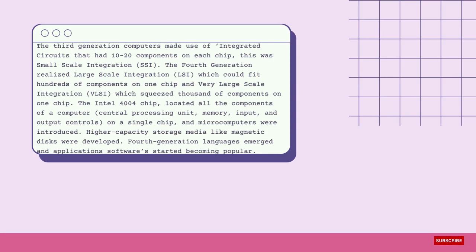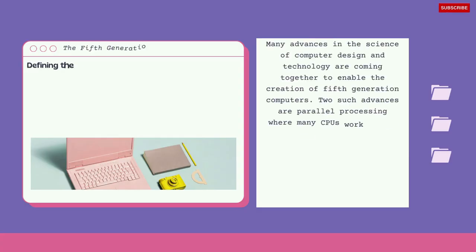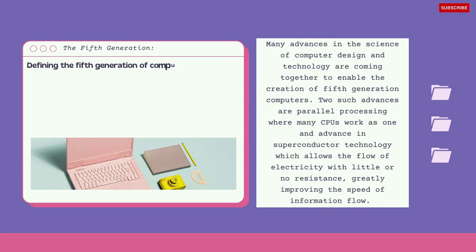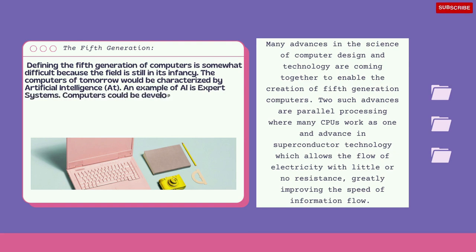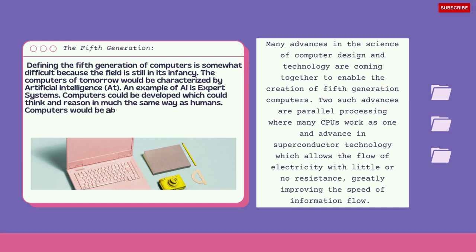The fifth generation. Defining the fifth generation of computers is somewhat difficult because the field is still in its infancy. The computers of tomorrow would be characterized by artificial intelligence (AI). An example of AI is expert systems. Computers could be developed which could think and reason in much the same way as humans, and would be able to accept spoken words as input — voice recognition.